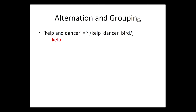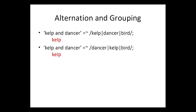Now some alternation and grouping. We've got the string 'kelp and dancer,' and we're looking for either K-E-L-P or D-A-N-C-E-R or B-I-R-D. I'm thinking about individual characters. In this case it matches kelp — one of the rules is it tries to find the earliest possible match, and unless we modify it, it tries to find the biggest match. So in the string 'Stephan likes kelp,' looking for either K, or K-E, or K-E-L, or K-E-L-P, it matches just the K because that's the first — earliest — thing it finds.